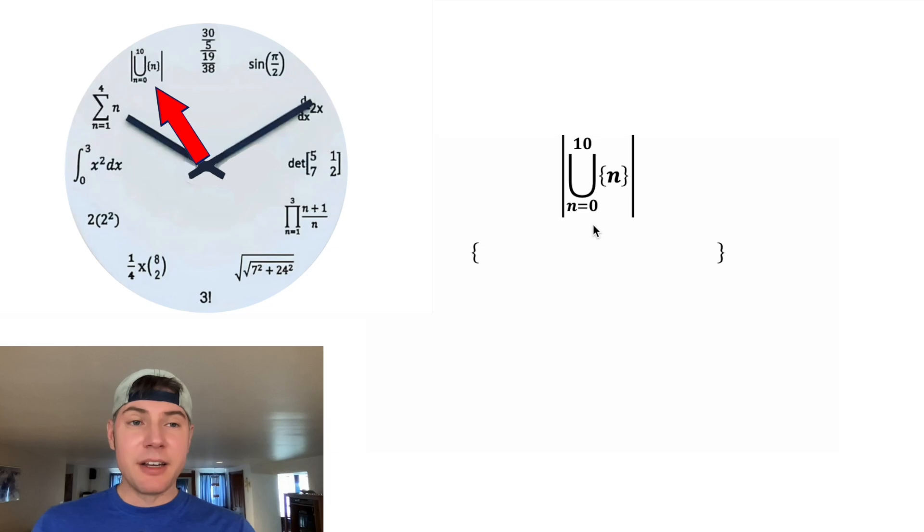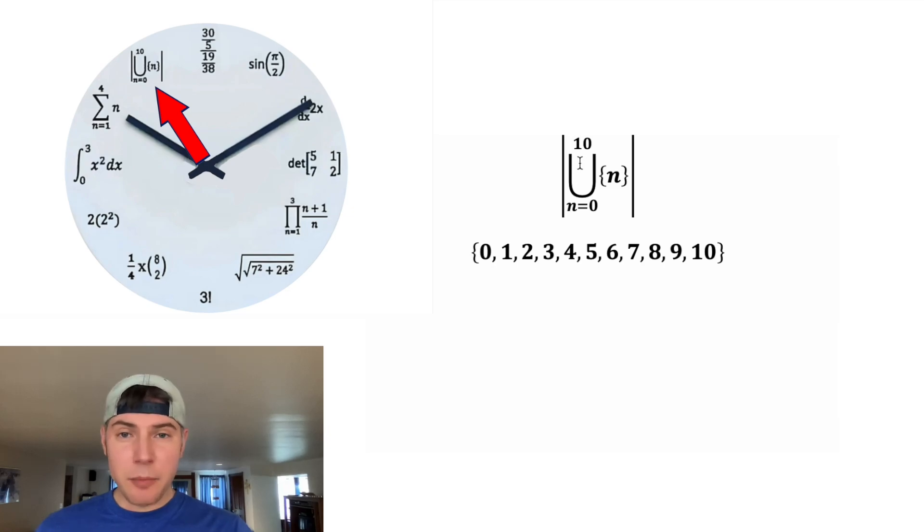Now for this thing, we're going to create a set. We're going to plug in 0 for n, and then 1, and then 2 and 3, 4, 5, 6, 7, 8, 9, and then we stop when we get to 10 because the 10's on top. So this just created this set. Now what these bars mean is how many elements are in this set. We can count them up and see there are 11 elements in the set. So this is equal to 11, and that's why it's at the 11 o'clock hour.